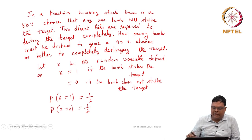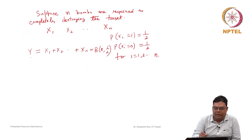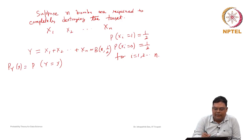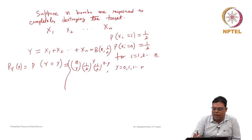Now, for destroying the target, two direct hits are required. So this Y actually follows a binomial distribution. The probability that Y equals small y — the probability mass function that it hits the target — represents how many bombs out of n actually hit the target. This probability is n-choose-y times p to the power y times (1 minus p) to the power (n minus y), where p is one half, for y equal to 0, 1, ..., n, and 0 otherwise.